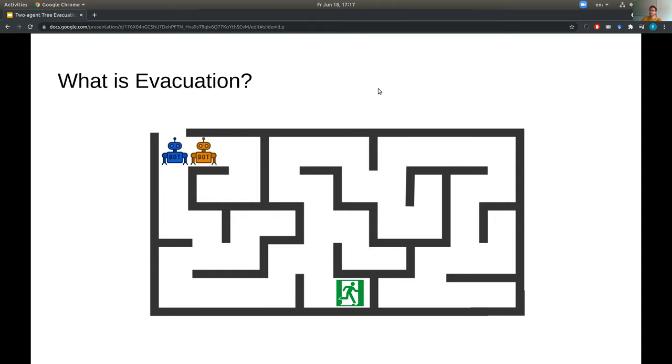Or they might decide to split up, so orange robot explores here, and then goes down, whilst blue robot explores here, and goes further, so that they meet up at this location. And then they ask, did you find the exit? No. Did you? No. And then they can carry on exploring together.